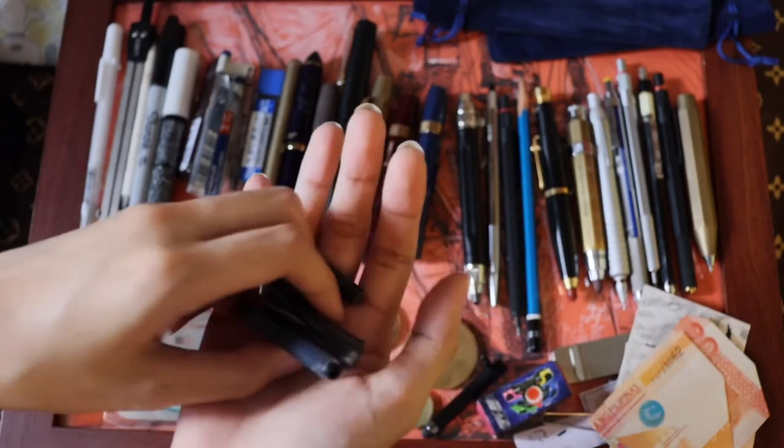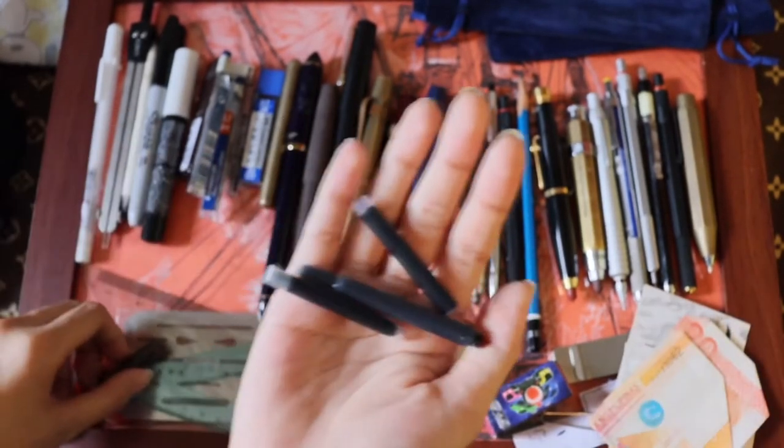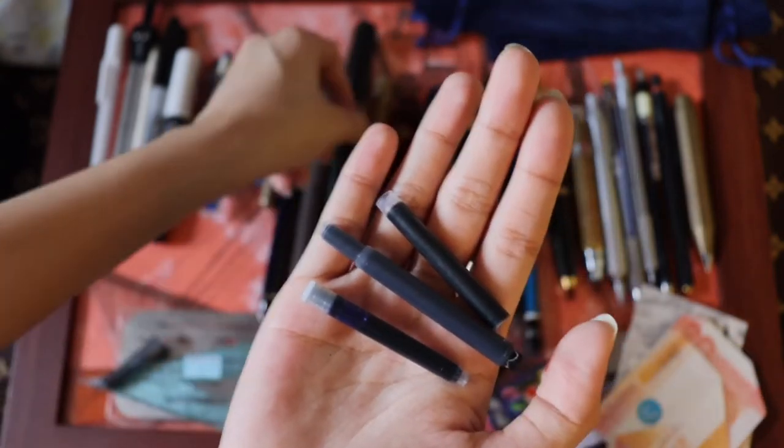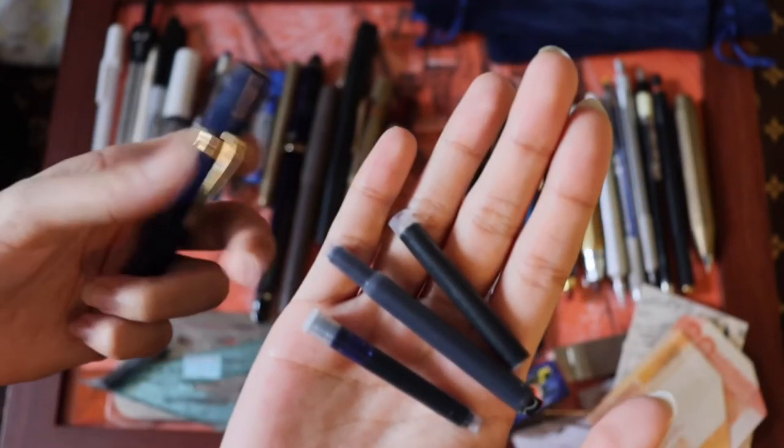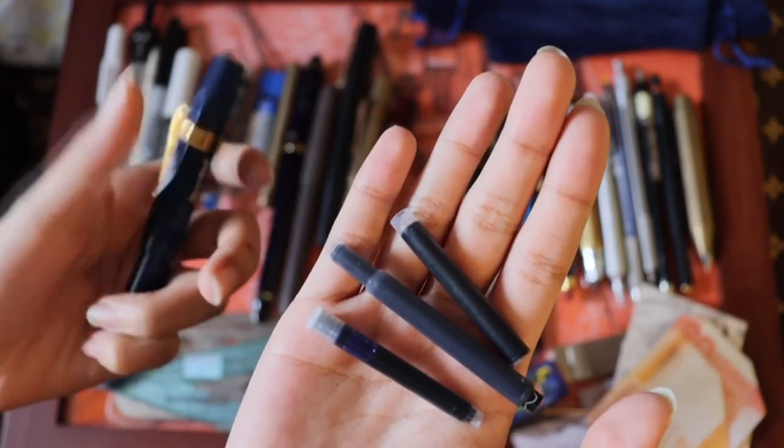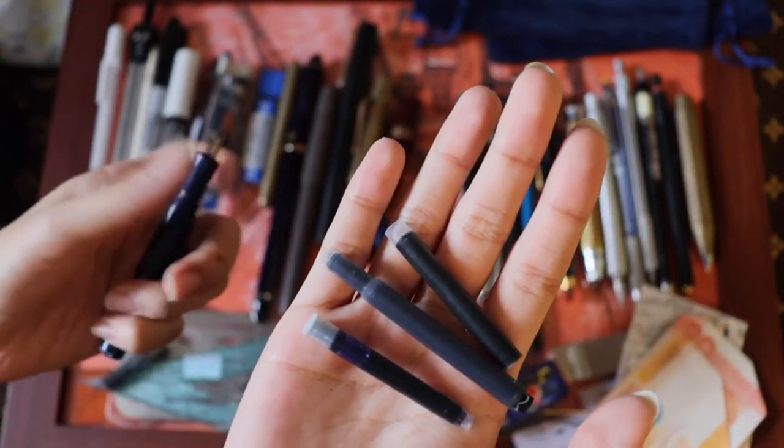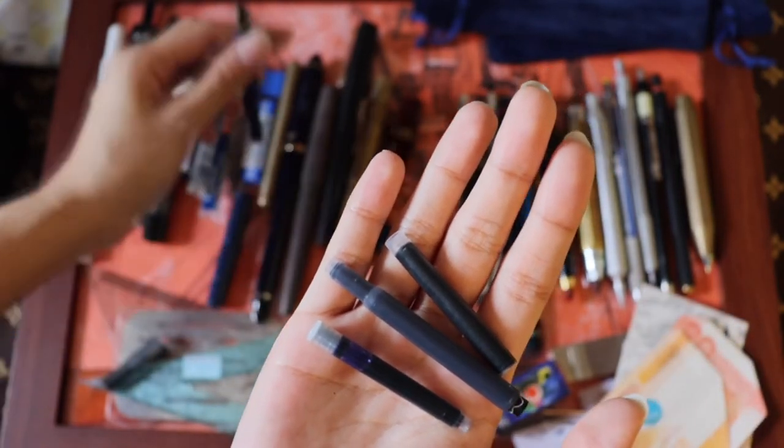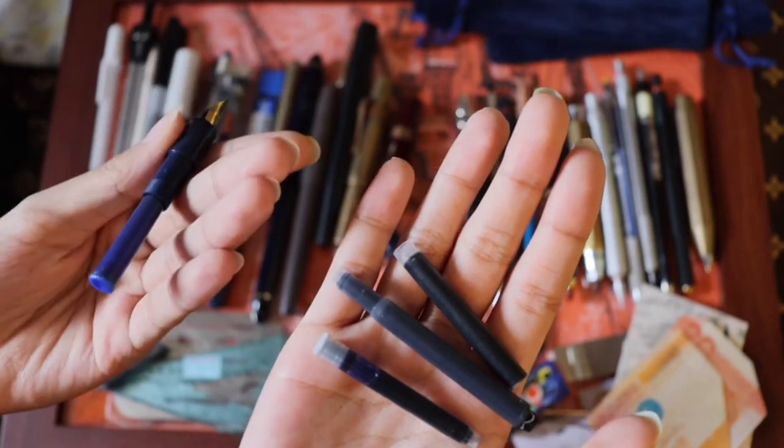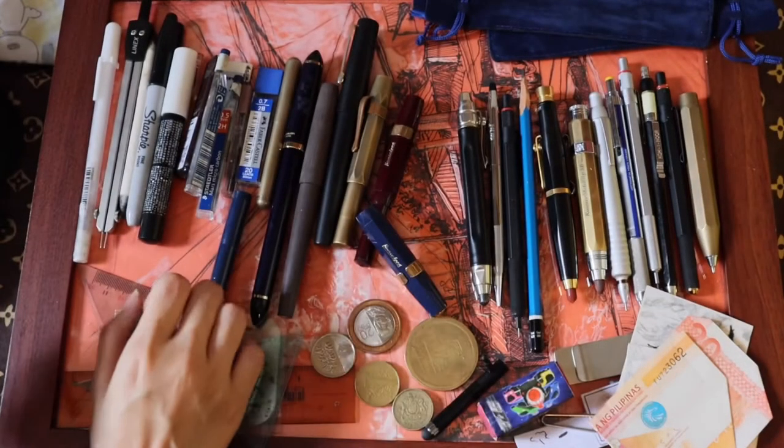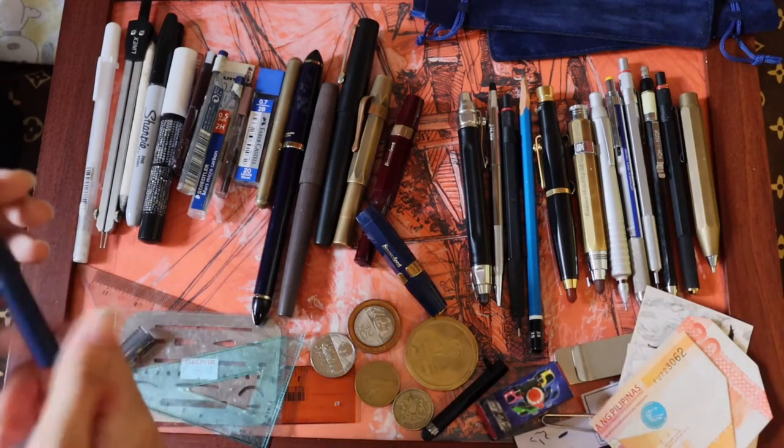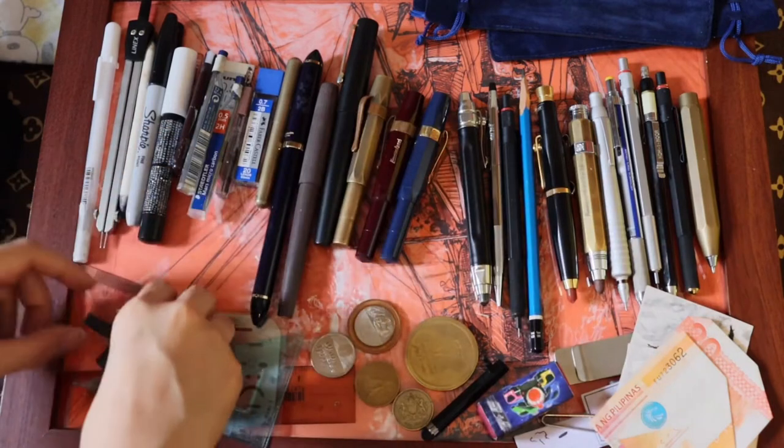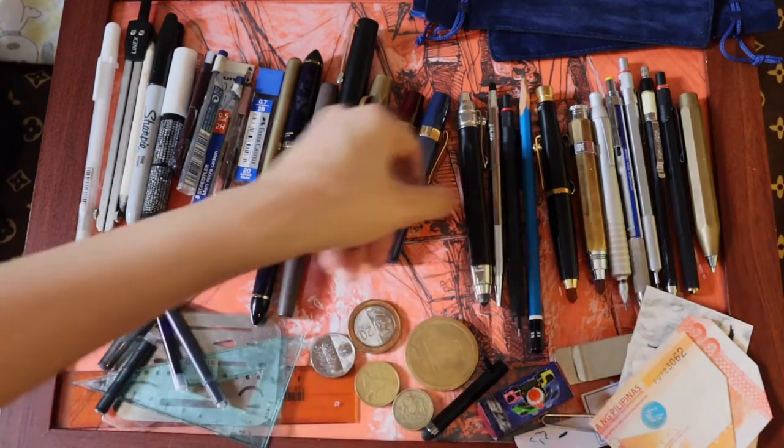And these are fountain pen cartridges. There are two ways to refill a fountain pen. One is through a bottle, you use a converter, or you can use a cartridge similar to the one I use for this Kaweco Sport. A cartridge works by just simply inserting it into the fountain pen. Although I don't recommend to just simply insert it when the old one runs out. I try to clean them as much as I can, like once a month.